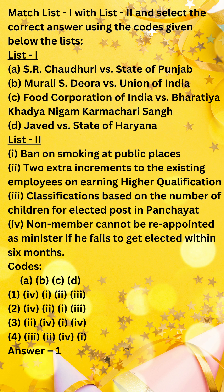The court held that the classification based on the number of children was reasonable and not violative of Articles 14, 21, and 25 of the Constitution of India. The court reasoned that the classification was based on an intelligible differentia, namely the number of children. The court also held that the classification was based on a legitimate state objective, namely to popularize the family planning program, and that the classification was not arbitrary or discriminatory.